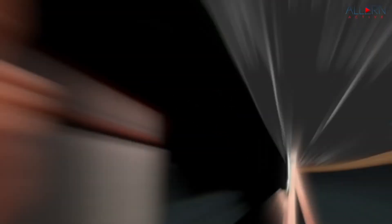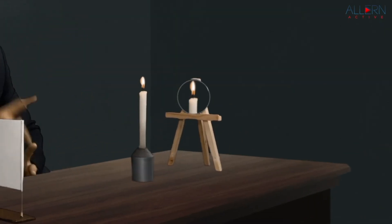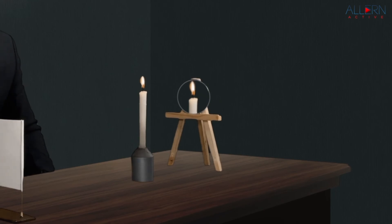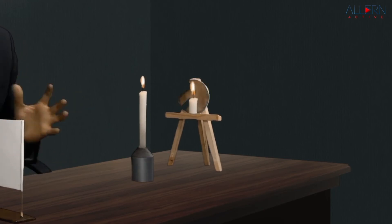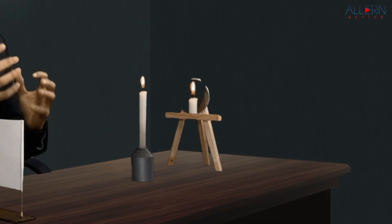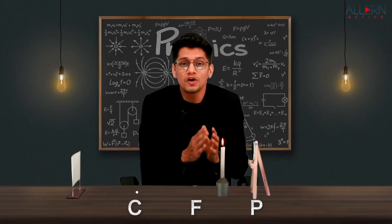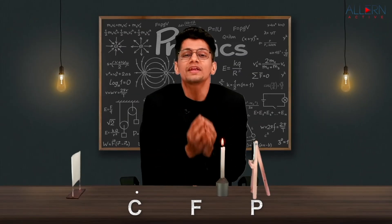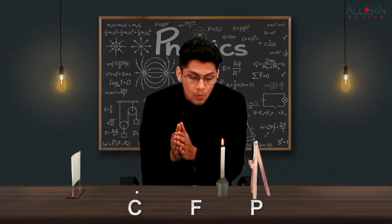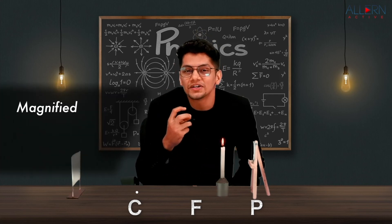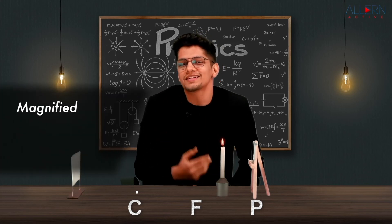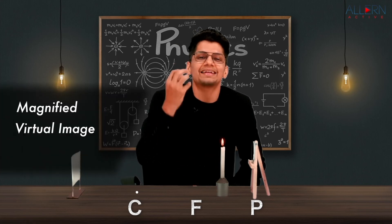If you look into the mirror, you can see the flame of the candle — the image appears erect and bigger in size. The moment we bring the object within the focal length, the size increases but the nature also changes: the image becomes virtual and erect.